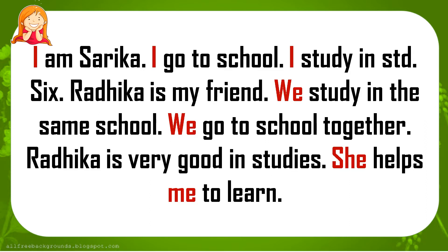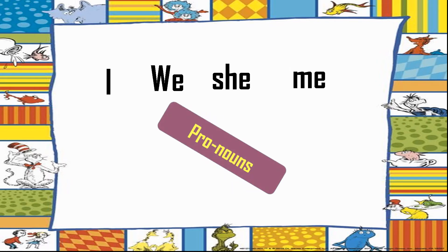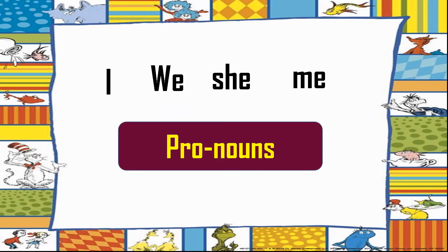Look at the words which are in red colour: I, we, my, she, me. These are the words we have used instead of writing Radhika and Sarika again and again. So what are those words? I, we, she, me are known as pronouns in English. Naming things — naming people, place, animal, birds, things — the things which we can see and which we cannot see — they are all known as nouns.